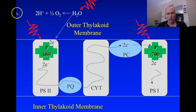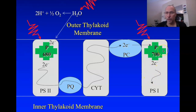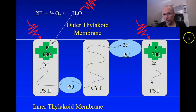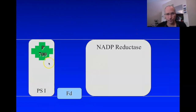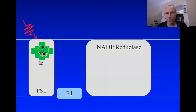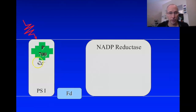Here's the picture we saw before — photosystem II and all the electrons going down to photosystem I. Now we're going to look at what happens to the right. A photon comes in and oxidizes P700, and two electrons now start participating in an electron transport chain.